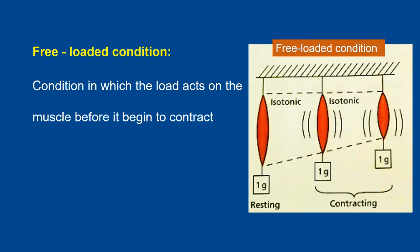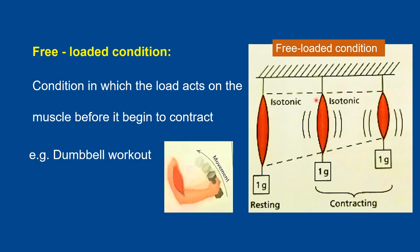Next is free loaded condition. This is the condition in which the load acts on muscle before it begins to contract. As you can see, the muscle is already stretched and hanged with a 1 gram weight. So before it starts contracting, the load acts on the muscle. After that, with the same stretch, it contracts. This is called free loaded condition. For example, dumbbell exercises, the dumbbell workout.